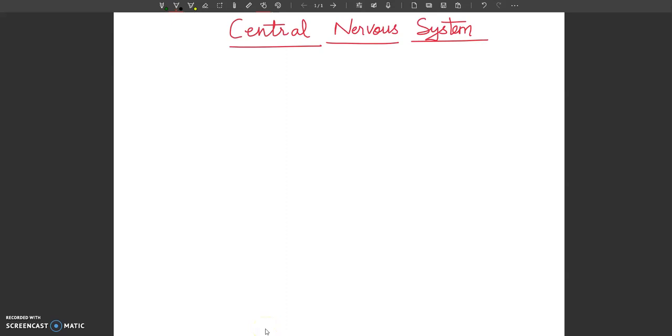Hello my dear students, welcome to my channel. Today's topic is the central nervous system, or CNS for short. The central nervous system consists of two parts: first is the brain, and second is the spinal cord.